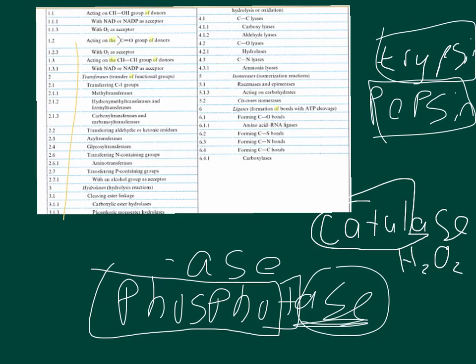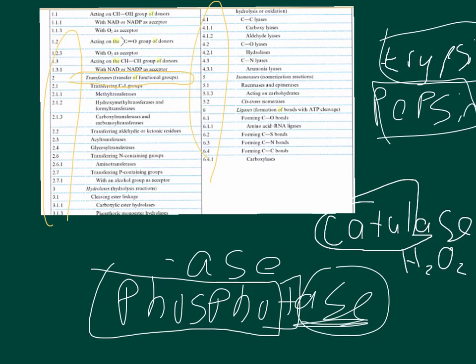And so you can see an example up here in the chart of these numbers that are assigned. Take example category number two, which are transferases. And then if you look down at subclass seven, these are transferases that transfer phosphate-containing groups. And then if you look at sub-subclass number one, these are transferases that can transfer phosphate-containing groups with an alcohol group as an acceptor.